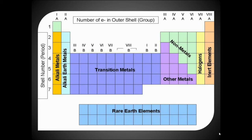The shell number indicates the period, with 1 to 7 shells corresponding to 1 to 7 periods. Some groups have specified names: Group 1A is known as alkali metals, 2A as alkaline earth metals, Groups 3A to 6A are known by their first member elements, 7A is considered the halogens, and 8A is considered the inert gases or noble gases.